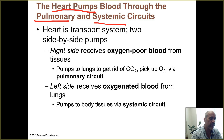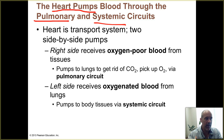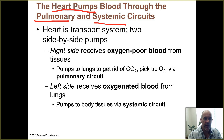The pulmonary circuit includes blood flowing from the heart to the lungs, and then back to the heart. The systemic circuit involves blood flow from the heart out to all other parts of the body — all systems — and then from there back to the heart.